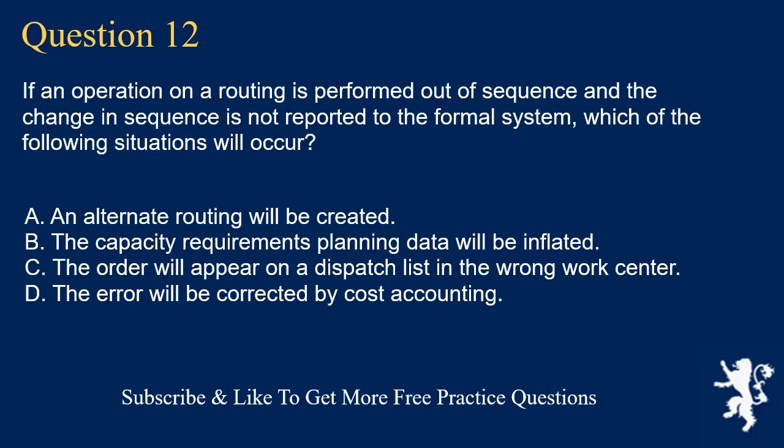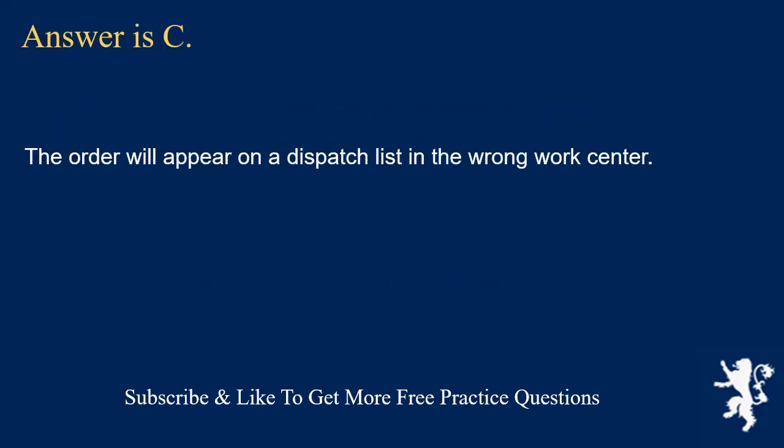Question 12. If an operation on a routing is performed out of sequence and the change in sequence is not reported to the formal system, which of the following situations will occur? A. An alternate routing will be created. B. The capacity requirements planning data will be inflated. C. The order will appear on a dispatch list in the wrong work center. D. The error will be corrected by cost accounting. Answer is C. The order will appear on a dispatch list in the wrong work center.